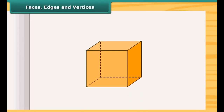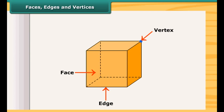Look at this cube. This is the face of a cube. This is the edge of the cube and this is the vertex of the cube. An edge is a line segment where the faces meet, and the vertices are the points where the edges meet.